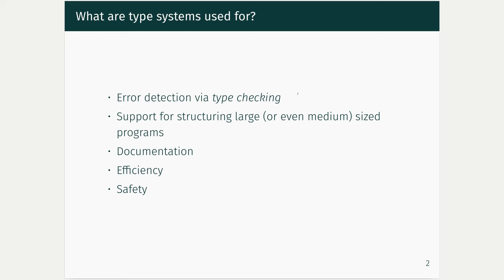We can ask what Type Systems are used for and they actually have a lot of different purposes. One of the most important purposes is to support error detection via type checking. You can think of the types as annotations on your program saying what you expect the behavior of the program to be, and the type checker checks to make sure that the program you wrote is actually consistent with those annotations. This is very helpful for error detection, but it's also very useful for structuring programs and helping to develop them as well. We talk a lot about abstract types where we introduce some type structure that's known to the implementation and hidden from the client.